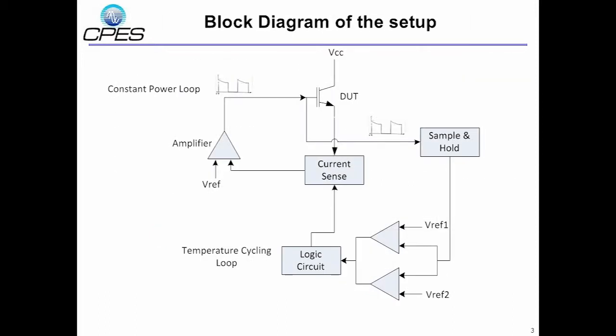This is the block diagram of the system. The system consists of two closed loops working together. The first one is to keep the heating power constant. The second one is the temperature cycling loop and helps switch from heating to cooling and cooling to heating whenever a temperature limit is reached.